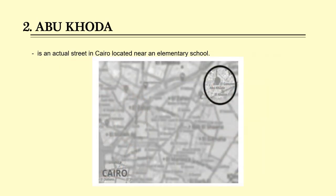Number 2: Abu Khoda. Abu Khoda is an actual street in Cairo, Egypt, located near an elementary school.